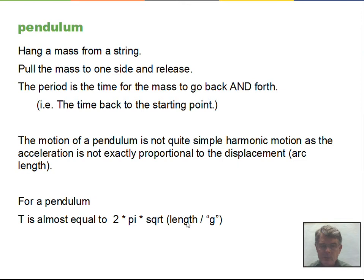The period is T = 2π√(L/g). To calculate the period, first compute L divided by g, then take the square root, then multiply by 2π. Any one of these variables might be the unknown — you might be given the period and asked to find the length, or given the length and period and asked to calculate the local value of g.